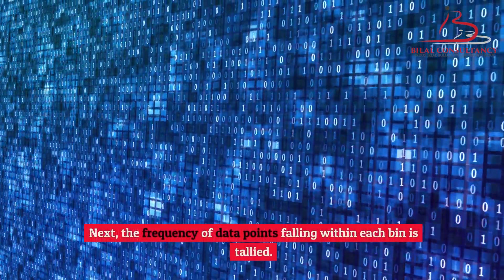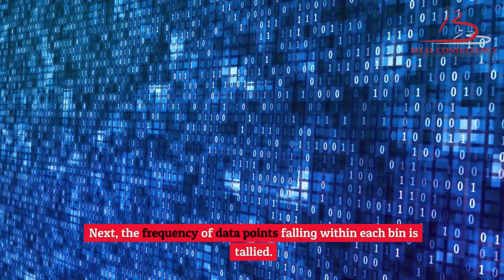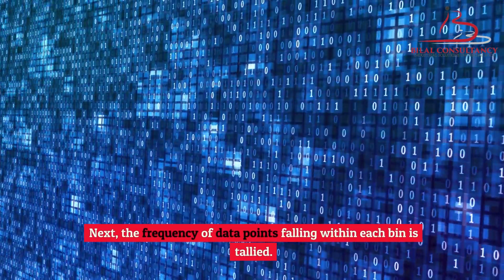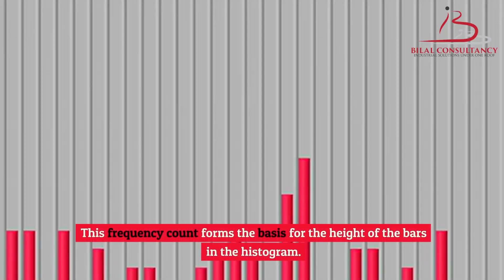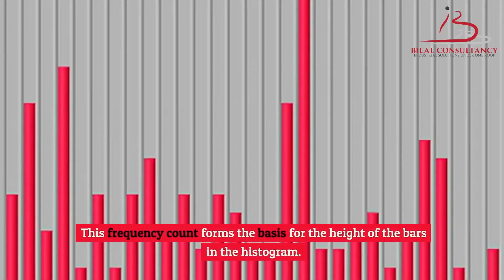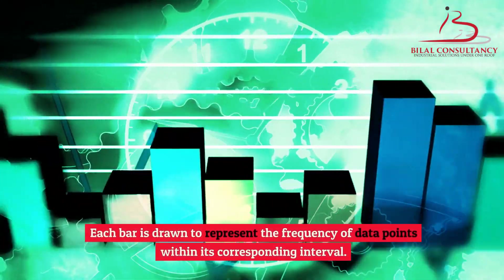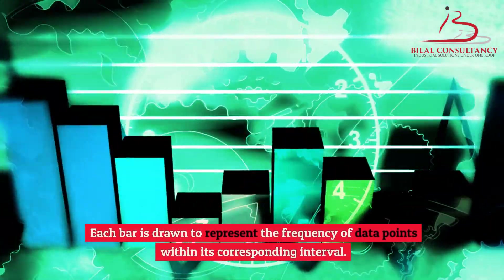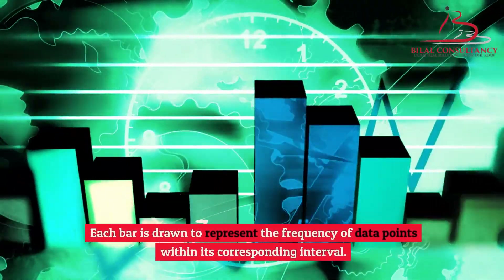Next, the frequency of data points falling within each bin is tallied. This frequency count forms the basis for the height of the bars in the histogram. Each bar is drawn to represent the frequency of data points within its corresponding interval.